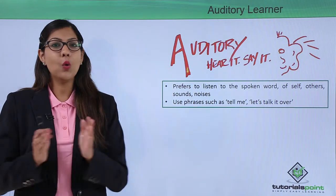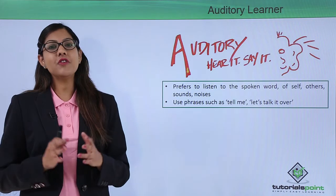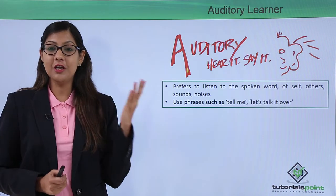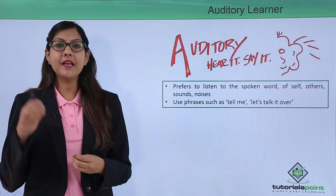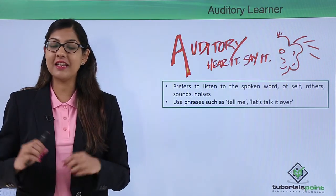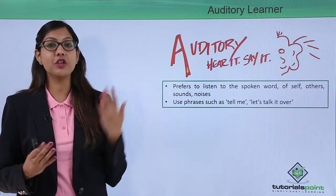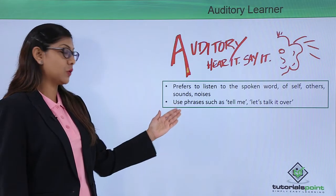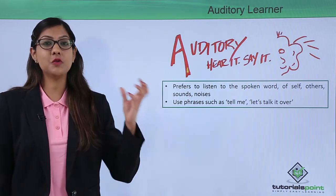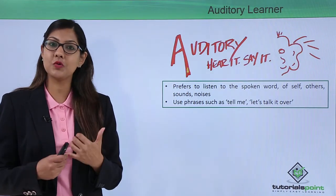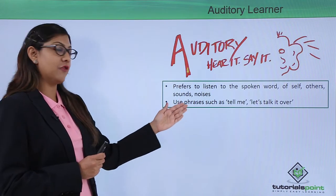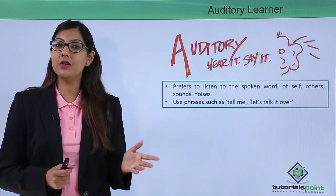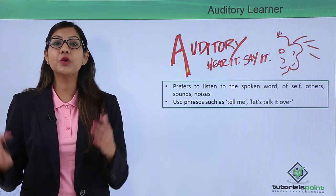Now let's understand the auditory learning pattern. Auditory learners are those who understand better by listening. Their sense of hearing is very strong and they hang on to each and every word being said. They learn by taking in information through hearing. They prefer to listen to the spoken word — of self or others — as well as to sounds and noises. They use words and phrases like 'tell me' or 'let's talk it over.' As compared to visual learners who see and believe, auditory learners hear and learn better.